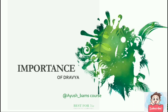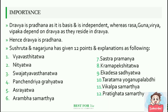We will now see what is the importance of all these Dravyas. Dravya is Pradhana — Pradhana means first — as it is the basis and is independent, whereas Rasa, Guna, Virya and Vipaka depend on Dravya as they reside in Dravya.